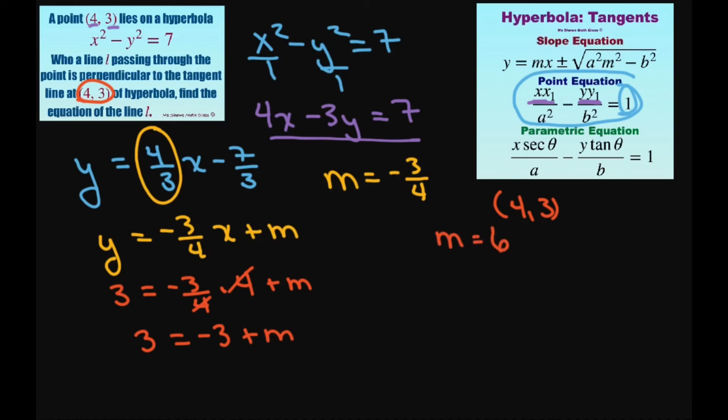Therefore the equation of the line, that's not the slope, that's your y intercept. So the equation of the line, you just substitute it back in, you're going to get y equals negative 3 fourths x plus 6.